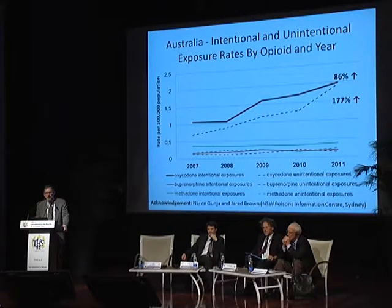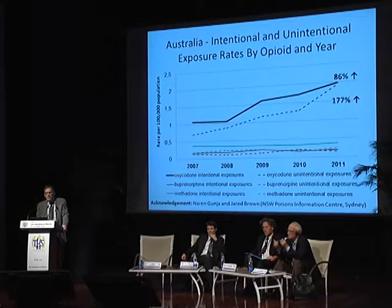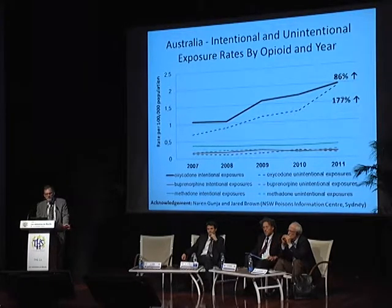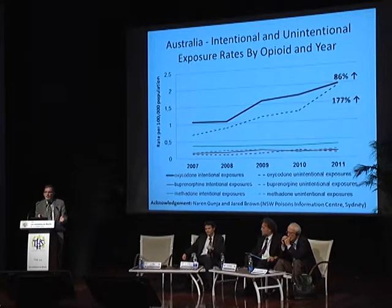This slide shows intentional and unintentional exposure rates by opioid and by year. The top dark solid line is oxycodone intentional exposures; the dotted line is unintentional. Together they represent all oxycodone exposures, and you can see they've increased dramatically in Australia, as well as in the United States and many other countries. Interestingly, methadone and buprenorphine have been fairly flat in Australia — just more evidence that people are people around the globe, and they like opioids.